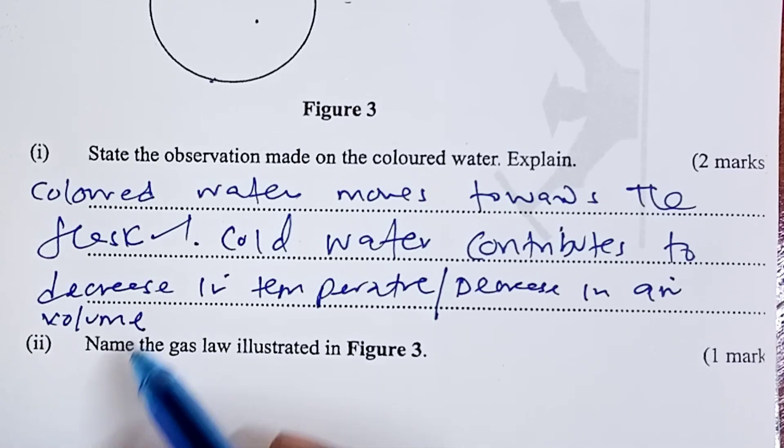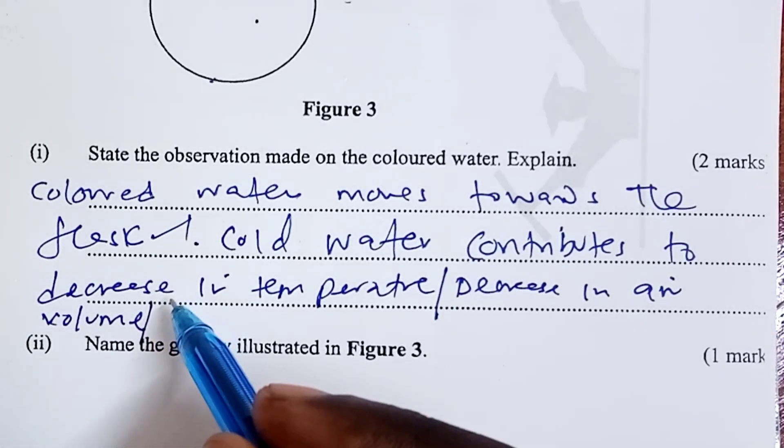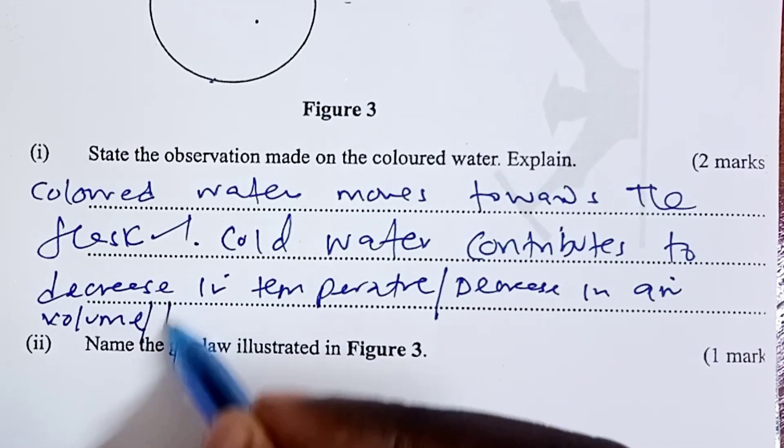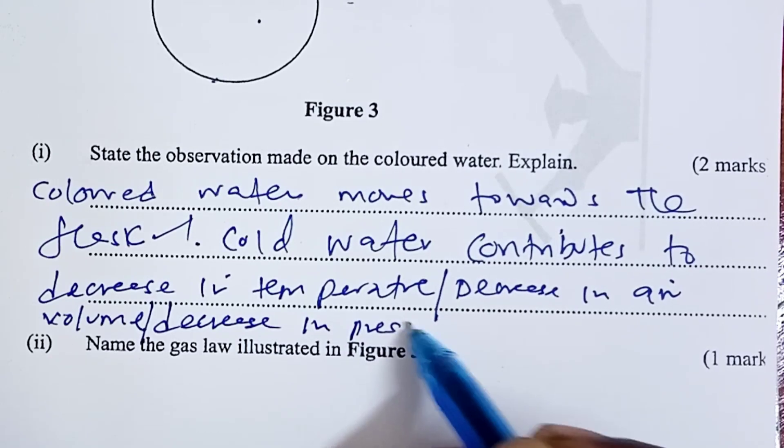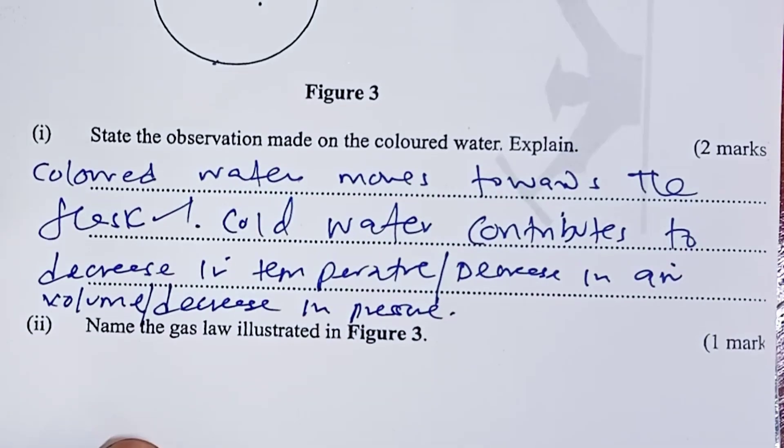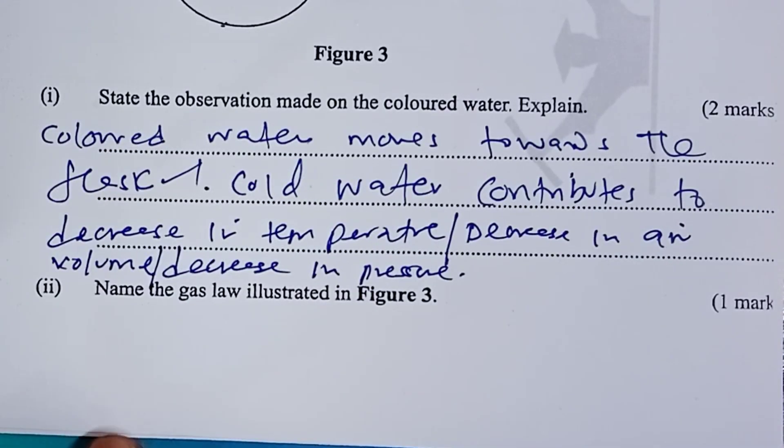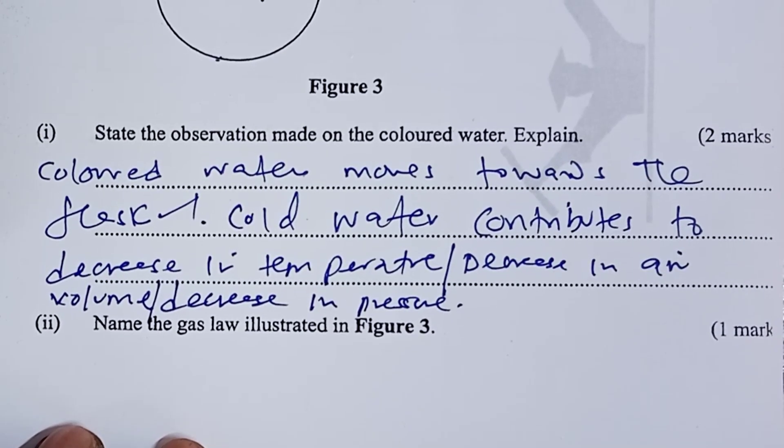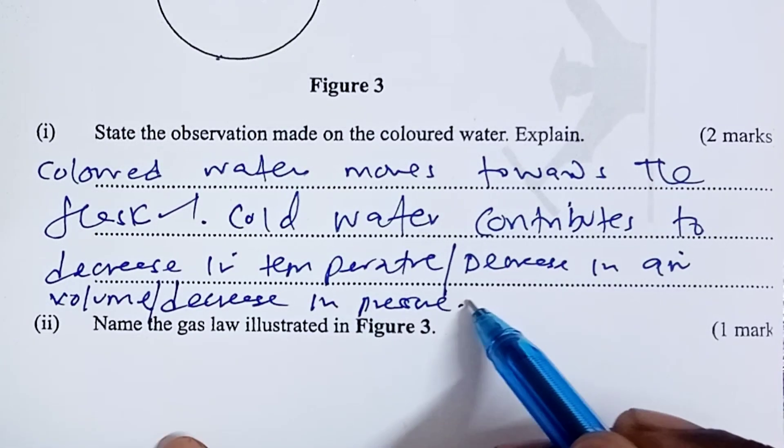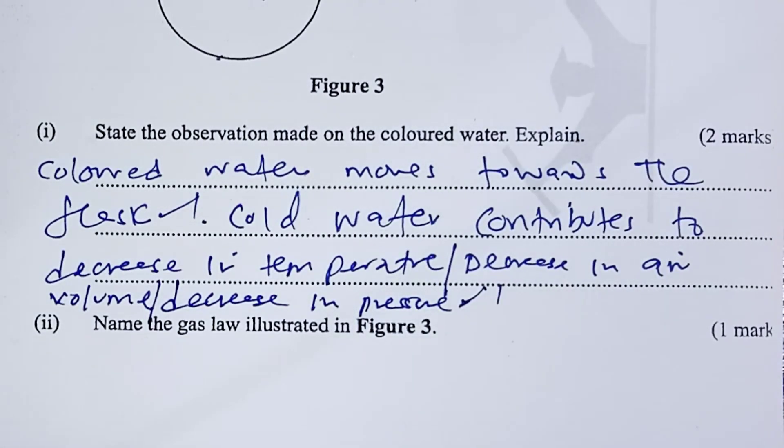Our interest is the volume of air that is inside the flask. Obviously, if you cool air, its volume is supposed to decrease. So, the observation here would be colored water moves towards the flask. This for one mark. And, then, we are told to explain.